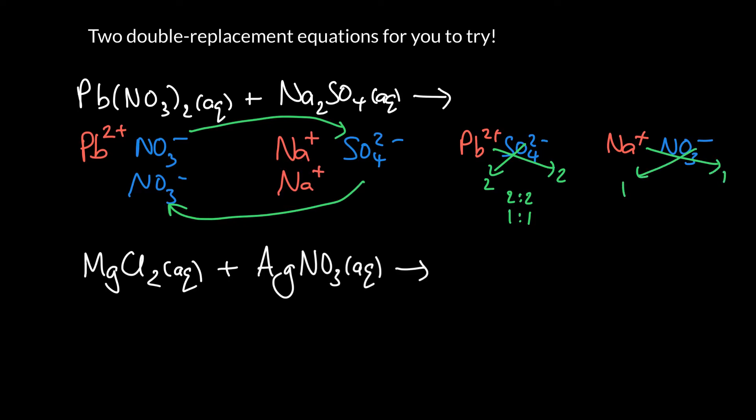So on the line above, okay, we could write lead sulfate, PbSO4. Remember, one of each cancels the charges. And then we got NaNO3.